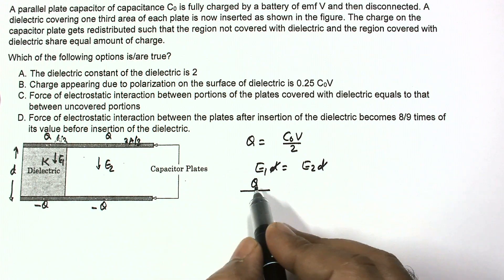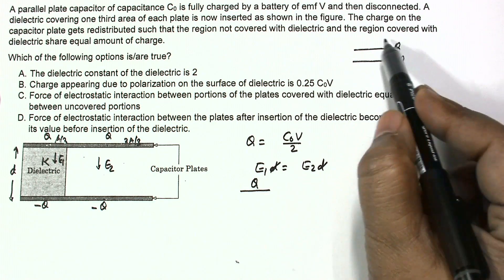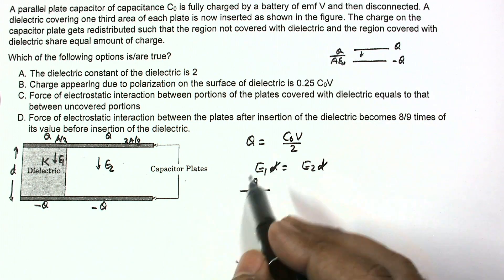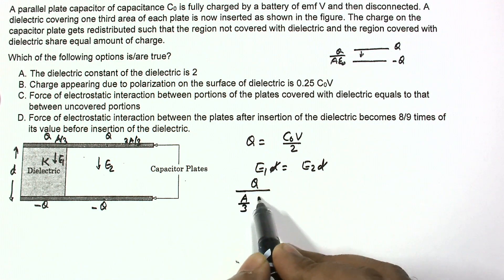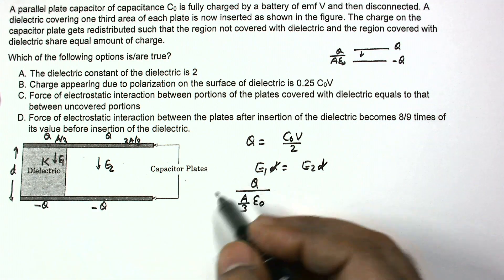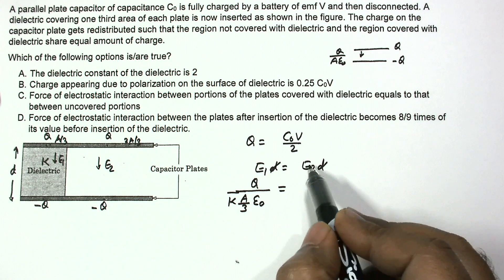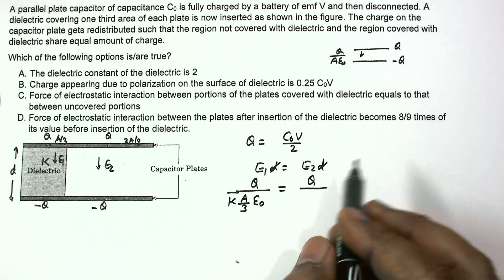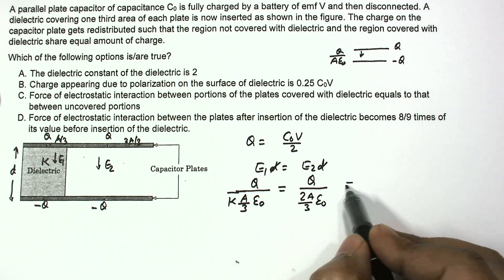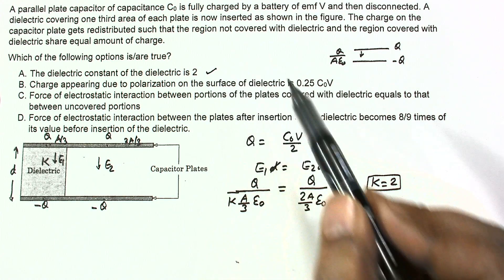The plate area for the uncovered region is A/3 and for the covered region is 2A/3. So E₁ = q/(A/3·ε₀) and E₂ = q/(A/3·ε₀·K), accounting for the dielectric reducing the field by 1/K. Comparing these gives K = 2, so the first option is correct — the dielectric constant K equals 2.